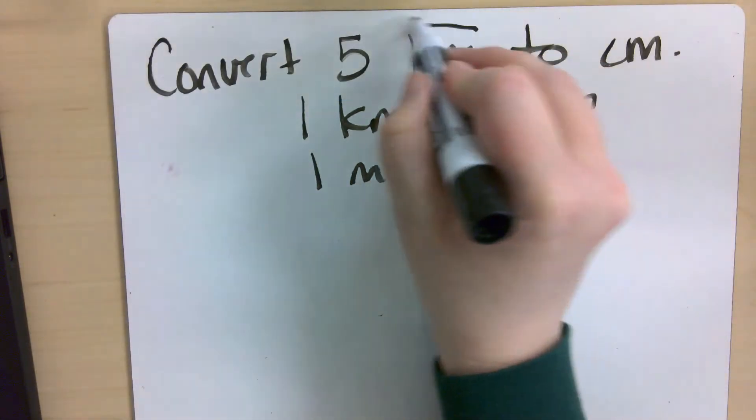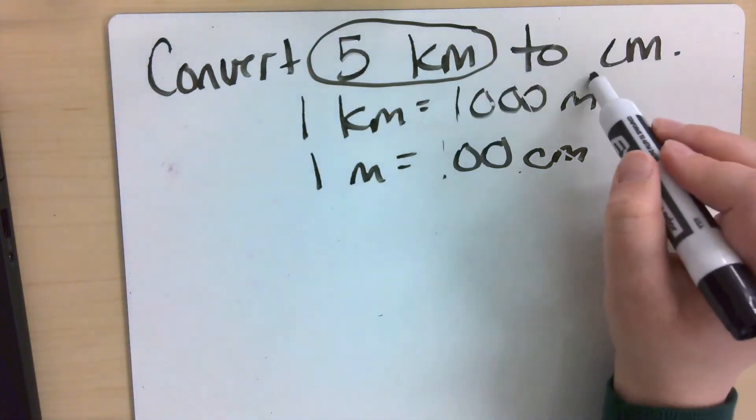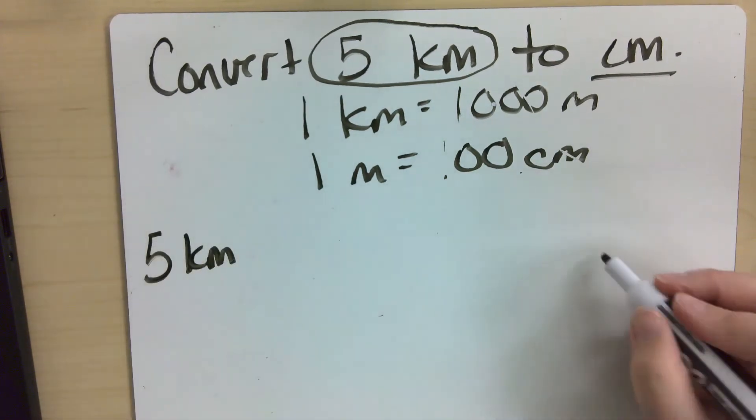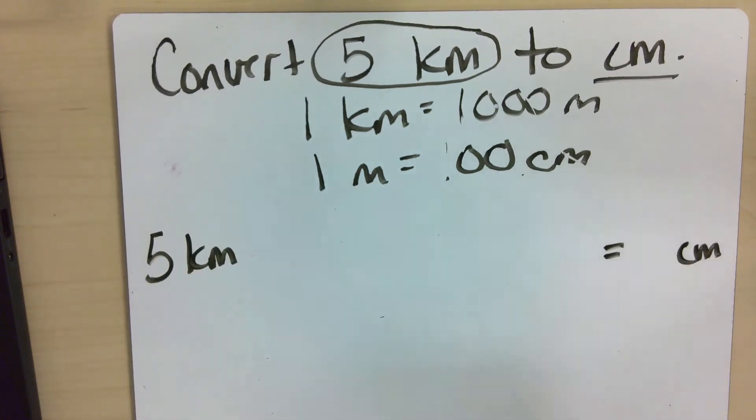All right, so I'm going to start by identifying what I'm given and figuring out where I'm going. So what I'm given is five kilometers. We have a big space, and I'm converting to centimeters.